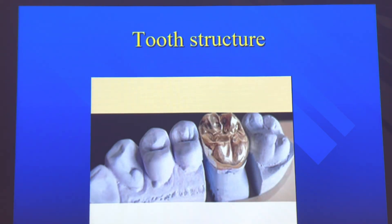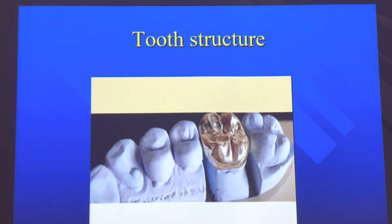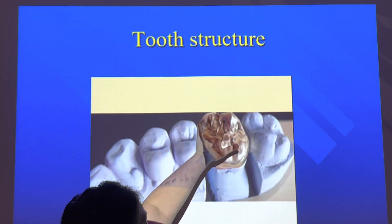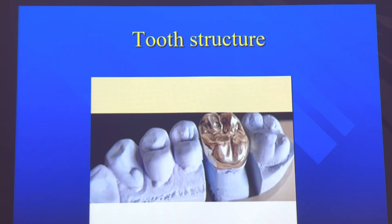As a dental lab technician, when you take that impression and pour it up to make a crown, you need to understand the tooth structure as well as the different parts of the teeth, such as the pits, fissures, and the structure of the cusp. You also need to understand how teeth fit together with the lower teeth when they go into occlusion.